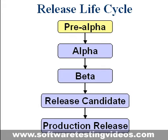In typical open source development, there are several types of pre-alpha versions. Milestone versions include specific sets of functions and are released as soon as the functionality is complete. Nightly builds are versions that are usually automatically checked out from the revision control system and built typically overnight. These versions allow the testers to test the recently implemented functionality immediately and find new bugs.